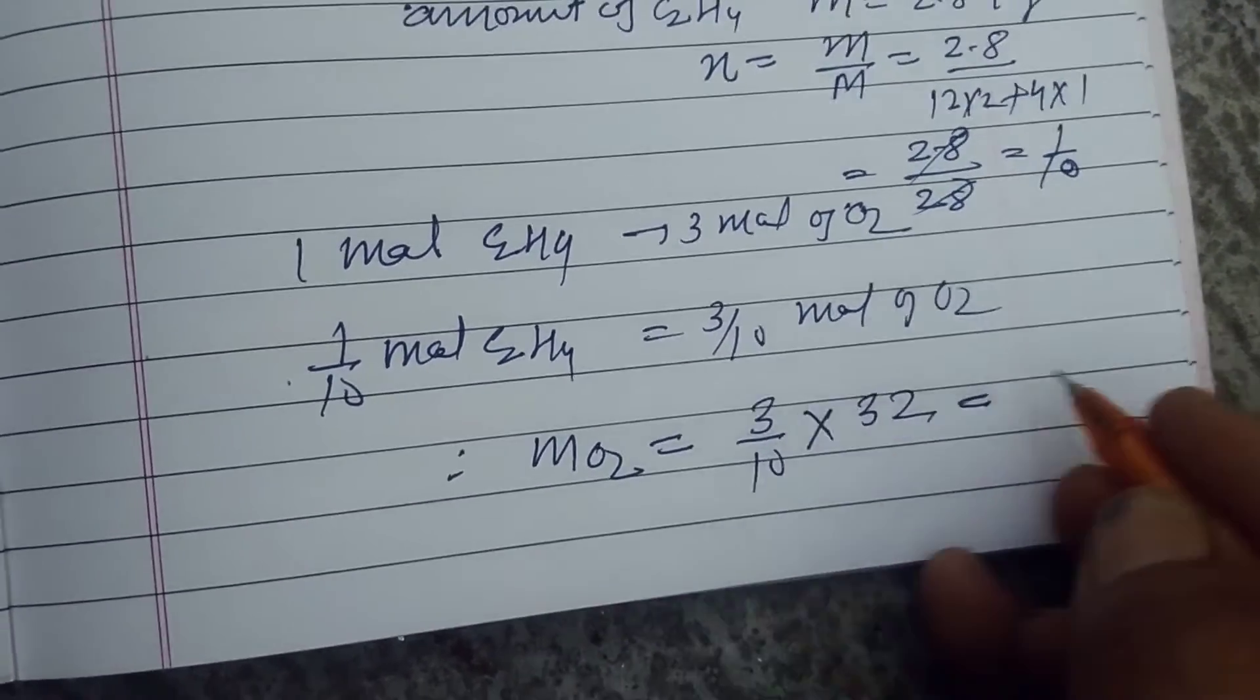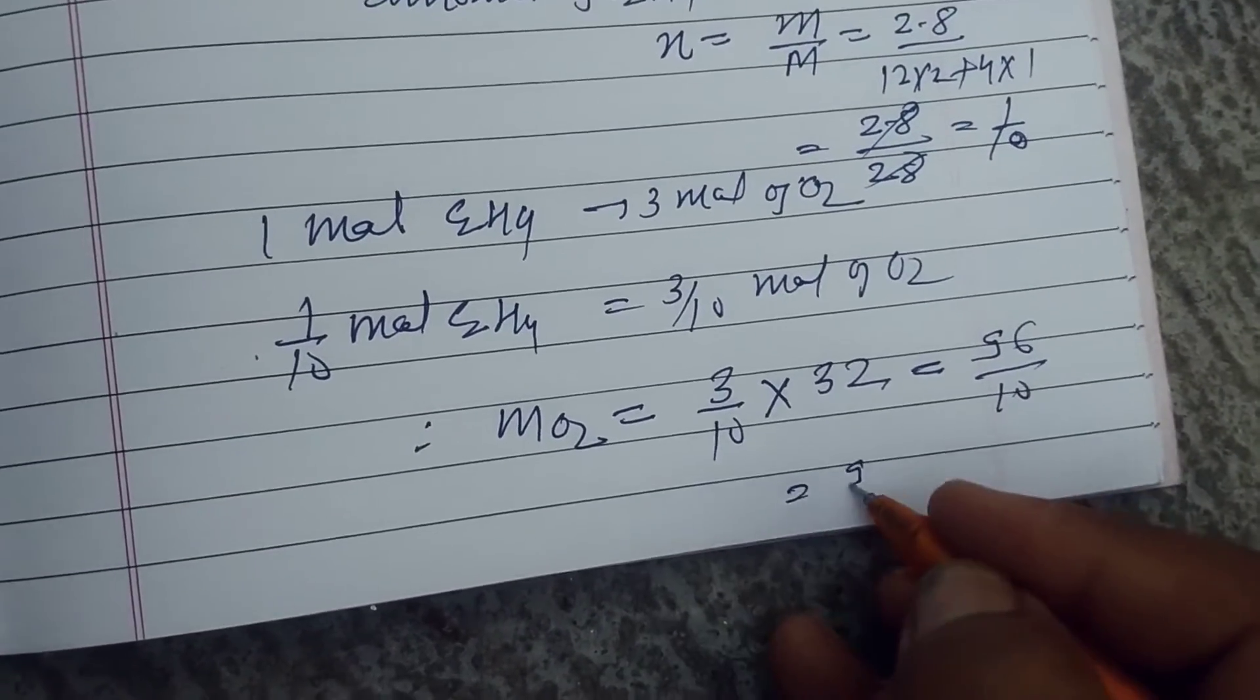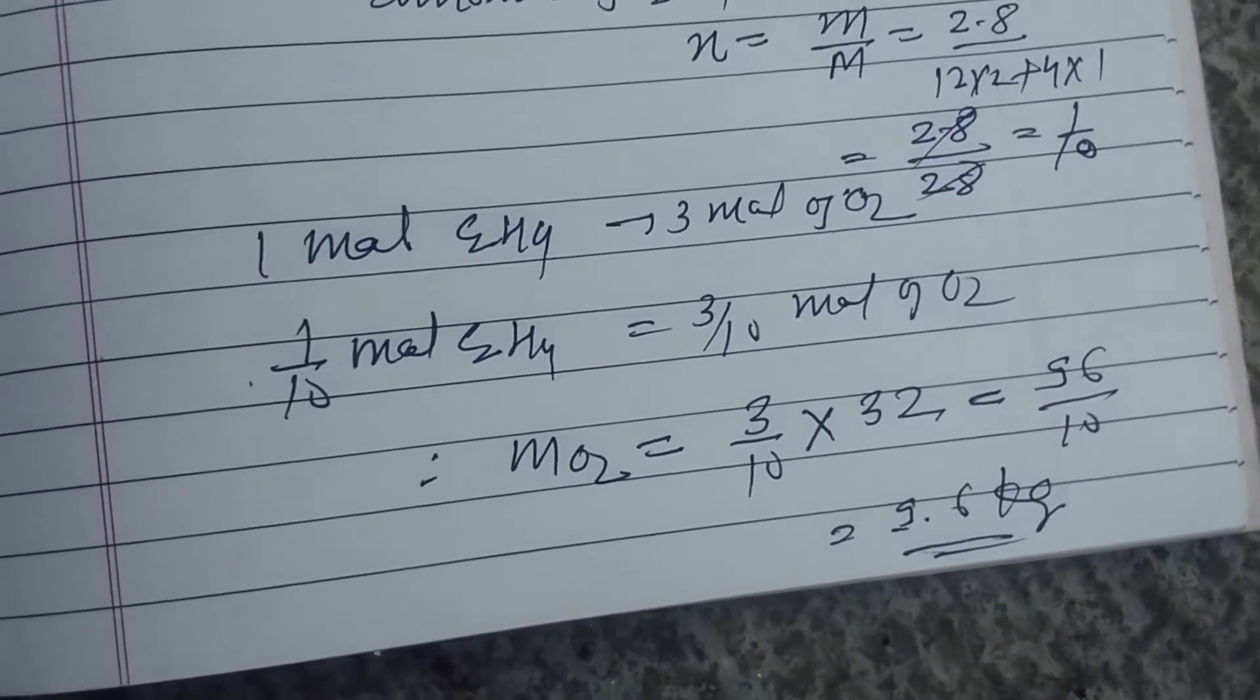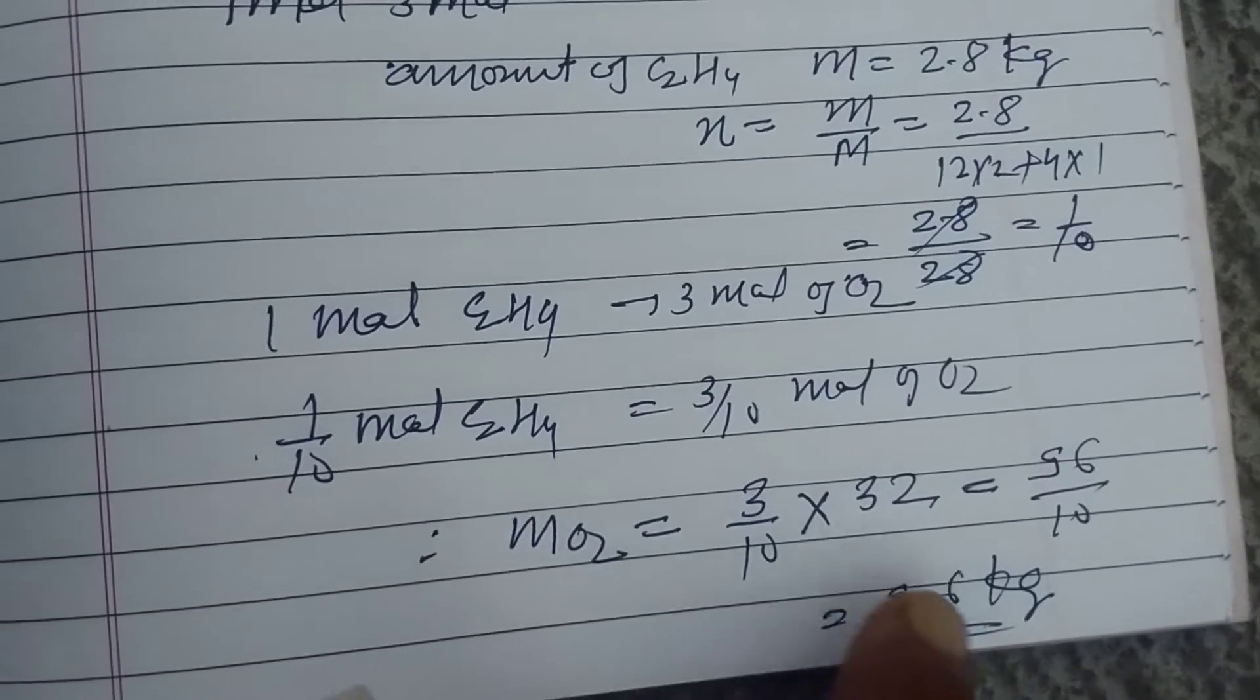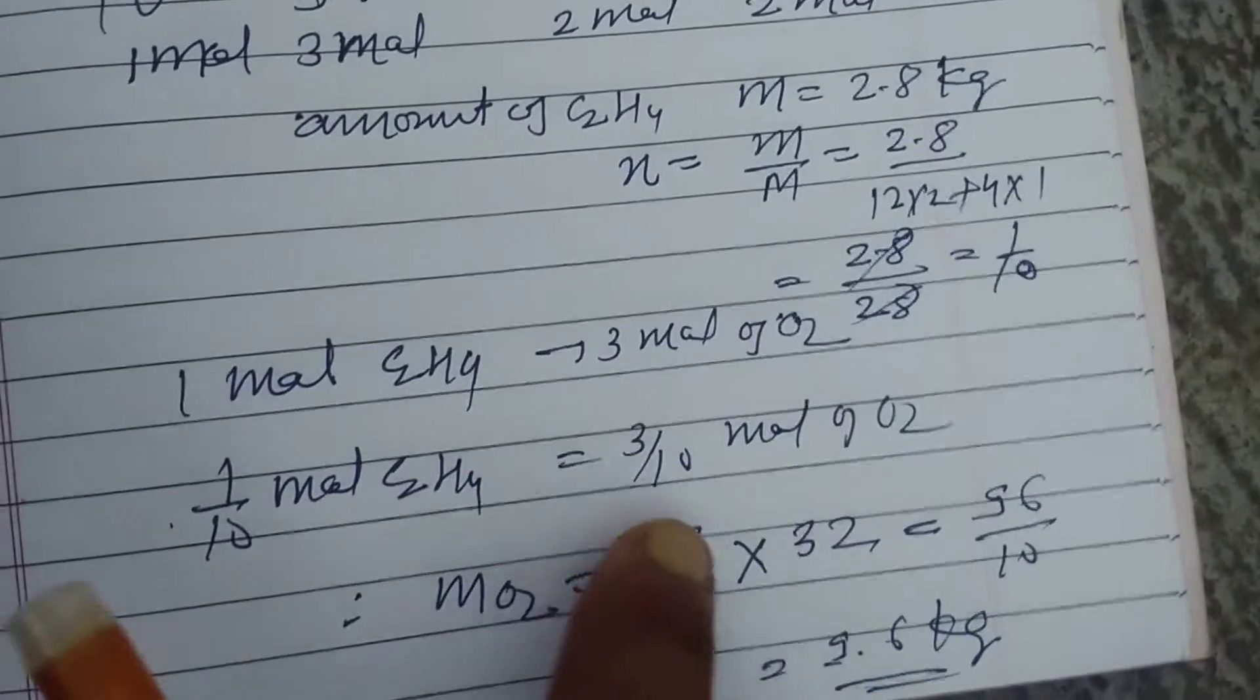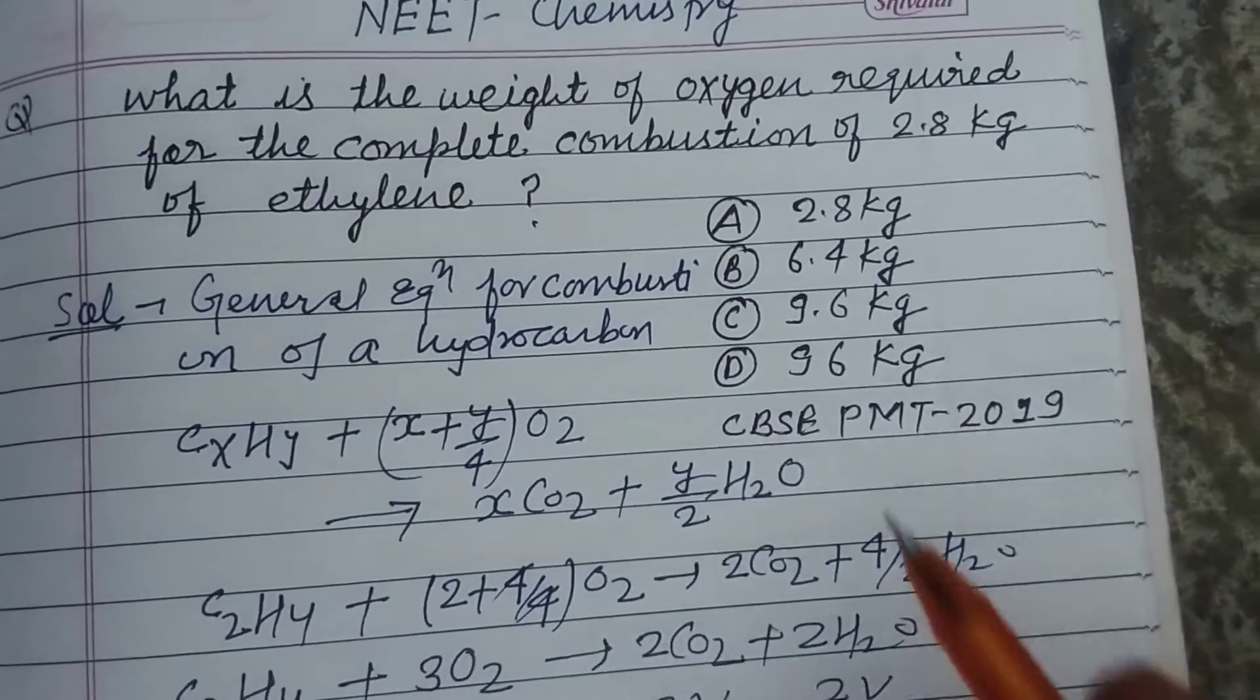So 32 into 3 is 96 upon 10, so 9.6 kilogram. Mass of oxygen required to combust 2.8 kilogram of ethylene. So answer of this question is C, 9.6.